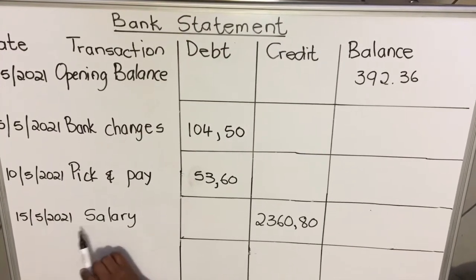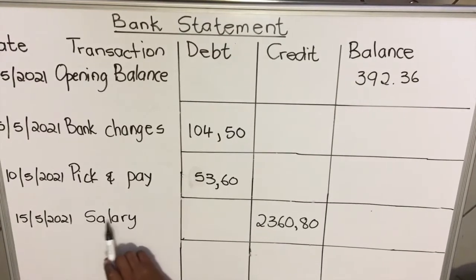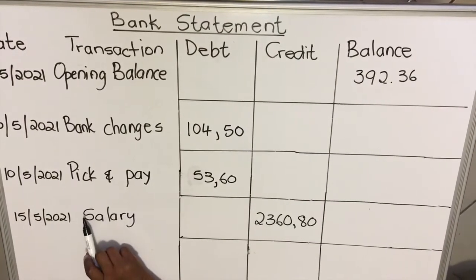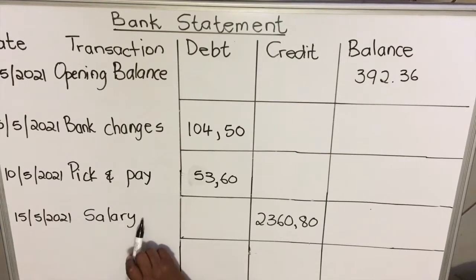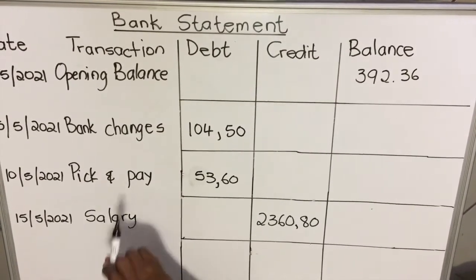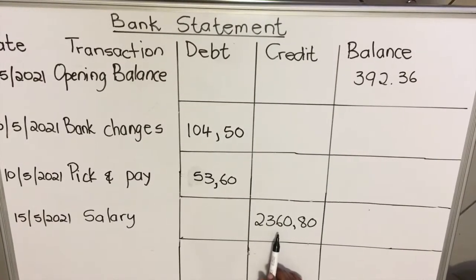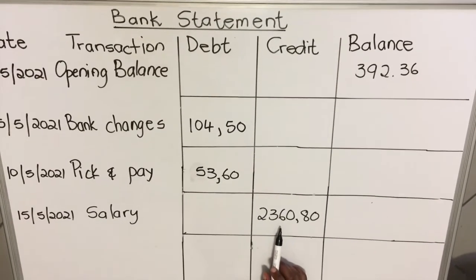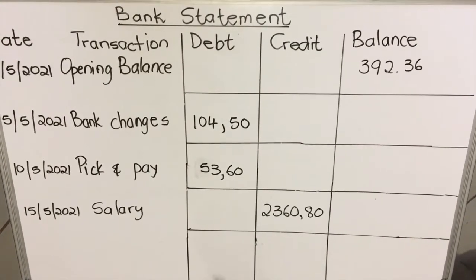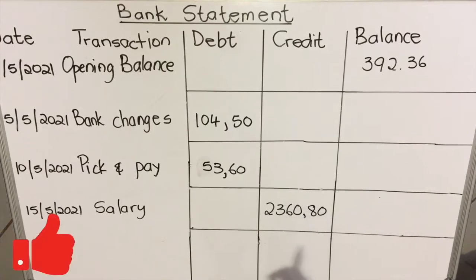Then on the 15th, the salary went in. Usually it will write the company's name — maybe you are working at ABSA, so it will say ABSA salary — and that amount goes into the account, so it's credited. If money goes into the account it will be credited.